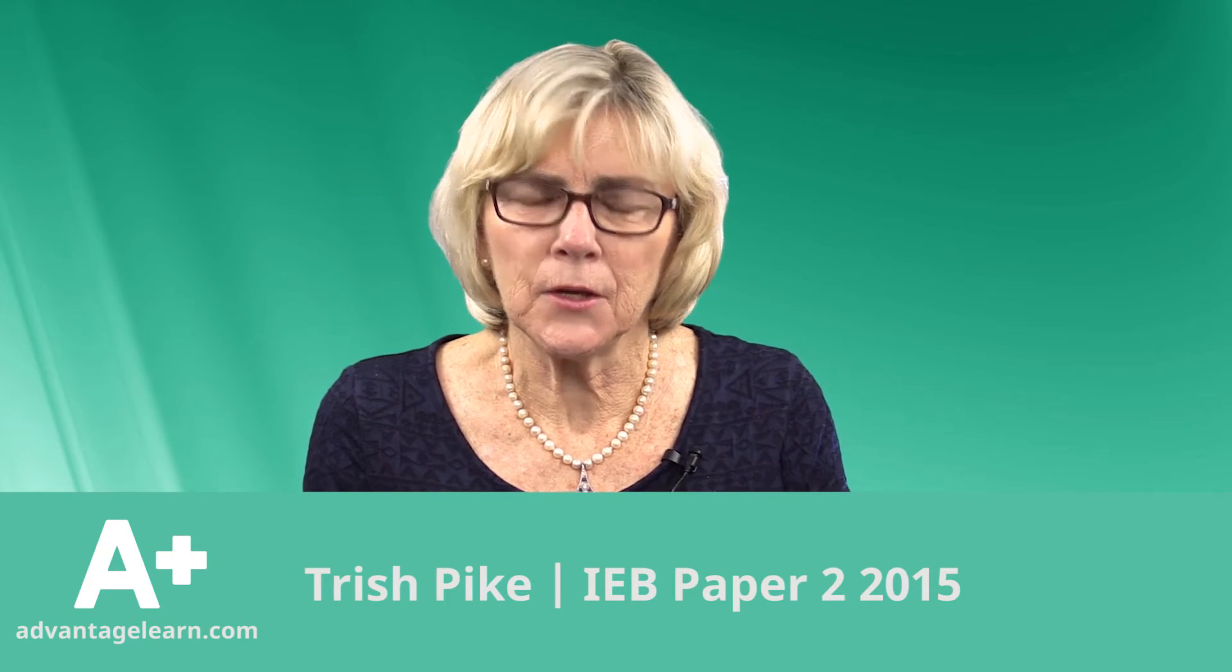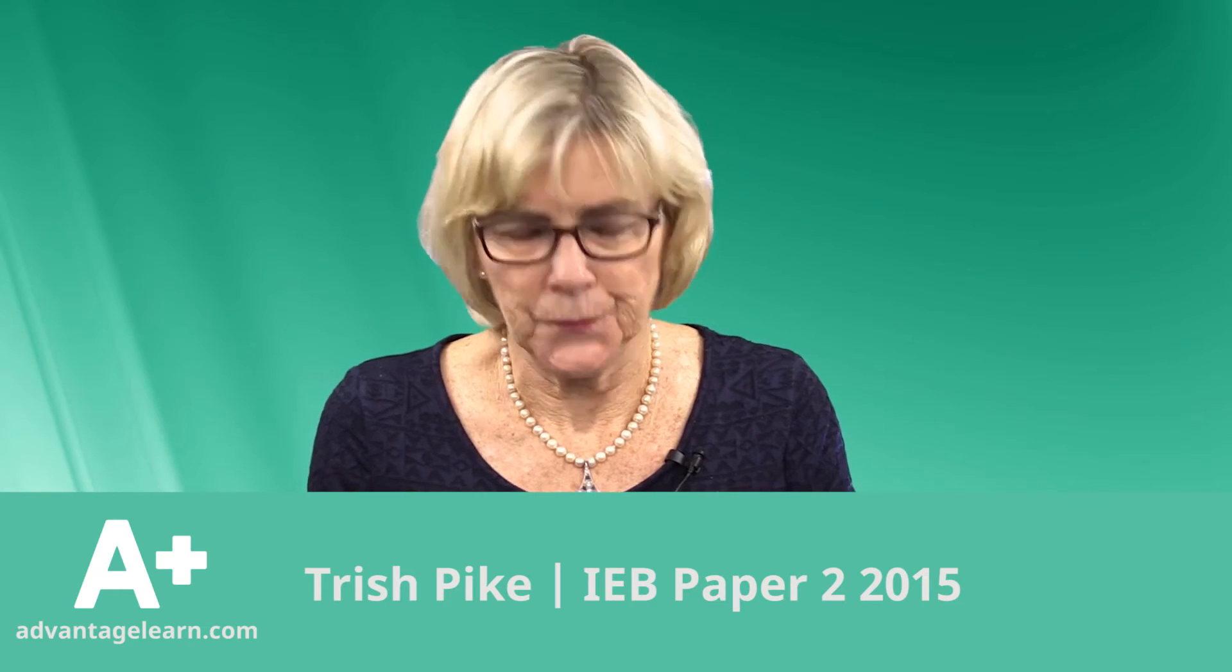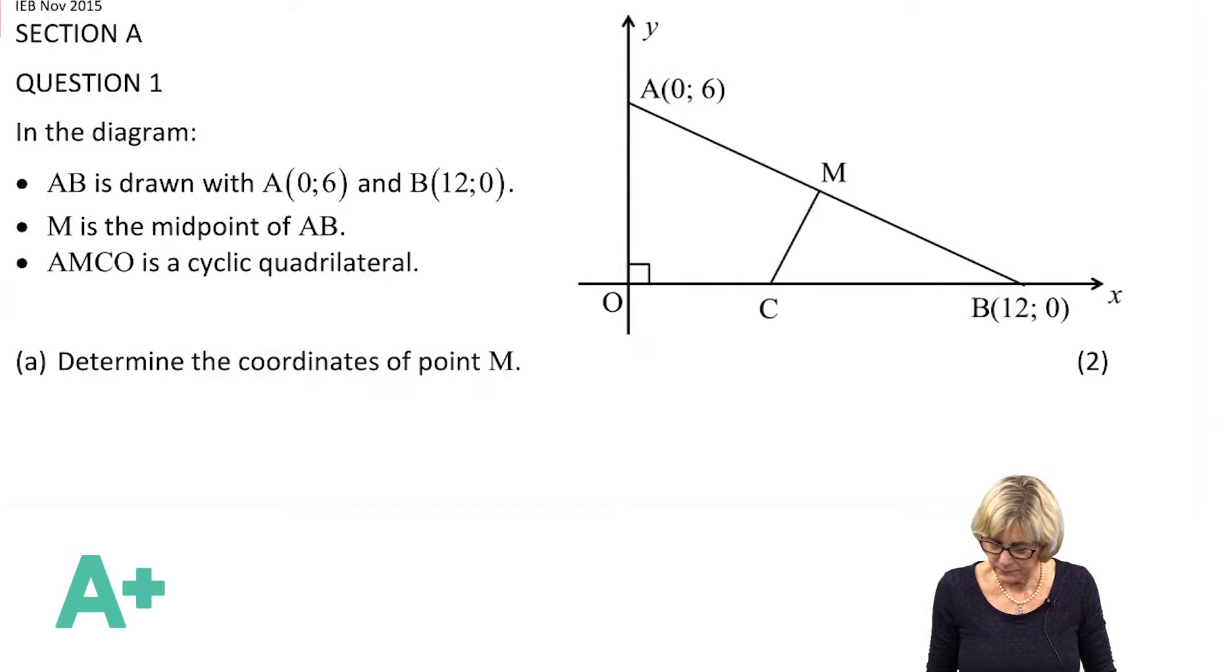We're doing the IEB November 2015 Paper 2, starting with Section A which is approximately 75 marks. I'm now going to do Question 1 with you. In the diagram, immediately my eyes go to the diagram - we've got our y-intercept and our x-intercept.